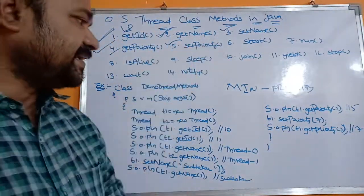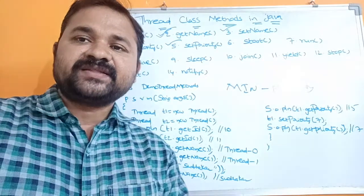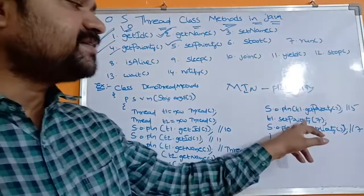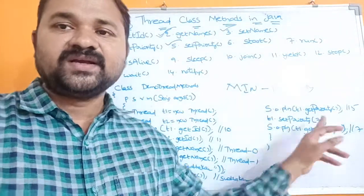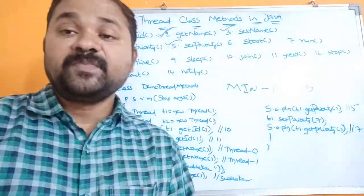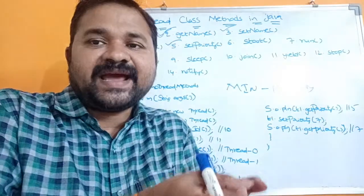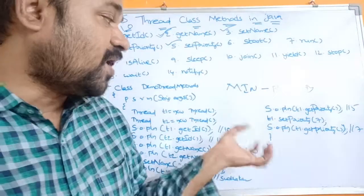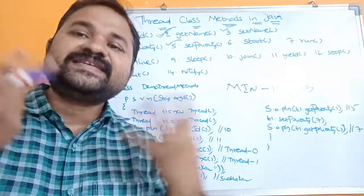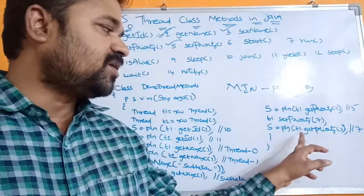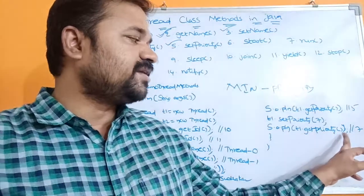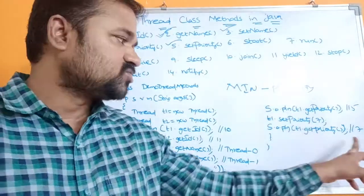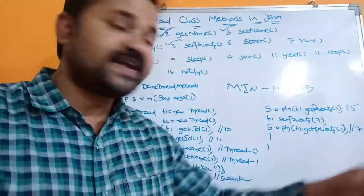The next method is setPriority. By using setPriority we can set the priority for a thread. For example: t1.setPriority(7). So initially the normal priority is 5, and now that thread's priority will be changed to 7. If we want to display that priority, we use getPriority: System.out.println(t1.getPriority()), and we will get 7 as the output.